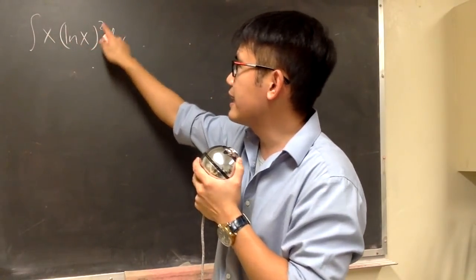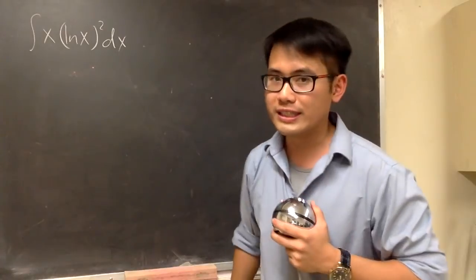This is the integral of x times the parentheses with ln x inside and raised to the second power. And we'll start off with a small u-substitution.